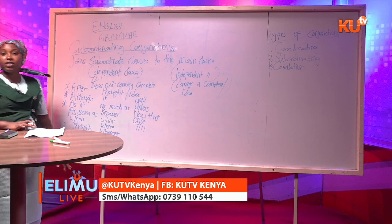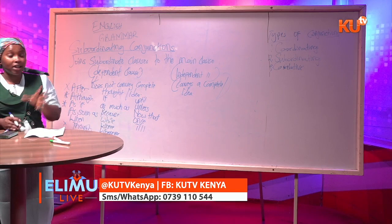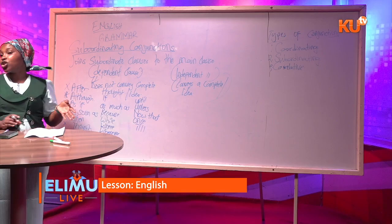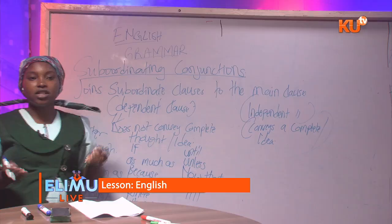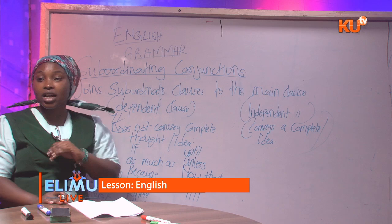Recall that in our definition, a conjunction is a word or a pair of words. For coordinating conjunctions, they were just one word. But for subordinating conjunctions, we have pairs of words or more than one word — that is why we said a conjunction is a word or a pair of words.